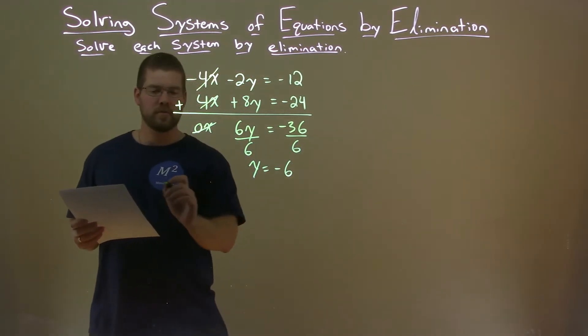Well, subtract 12 from both sides. We're left with negative 4x equals negative 12 minus 12, that's negative 24. Divide both sides by negative 4.